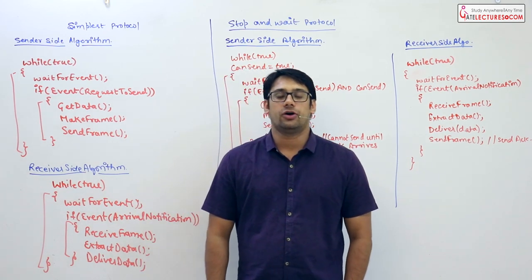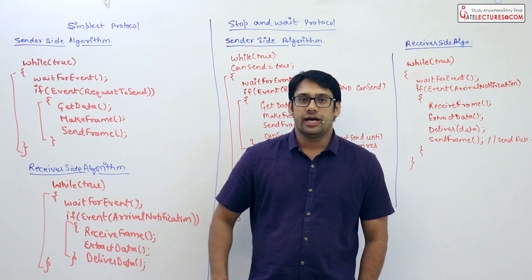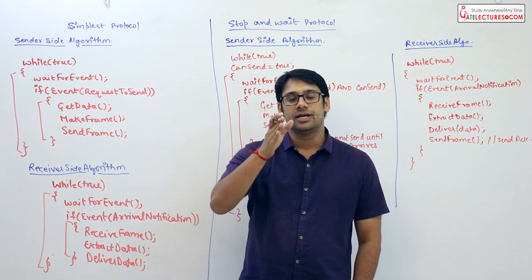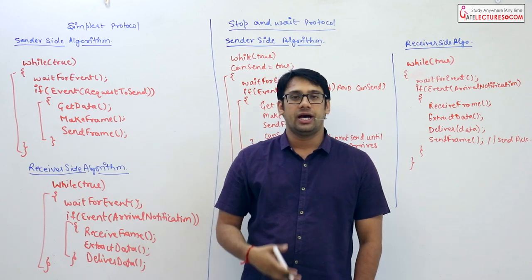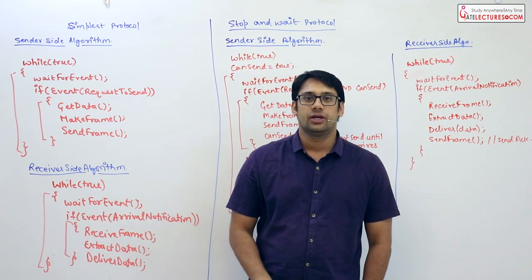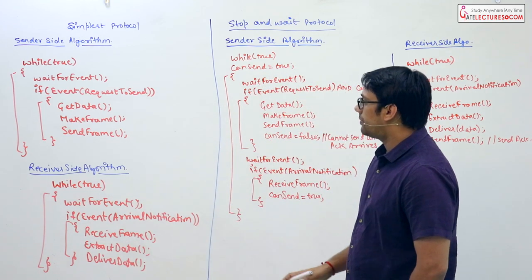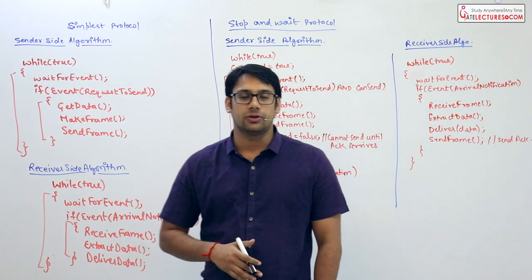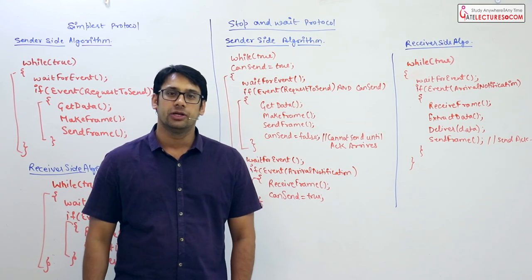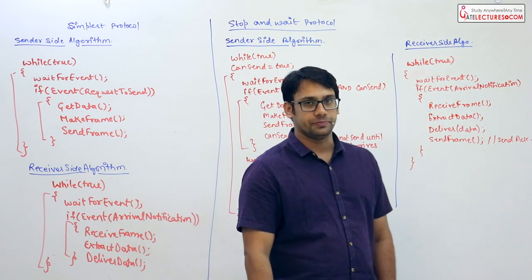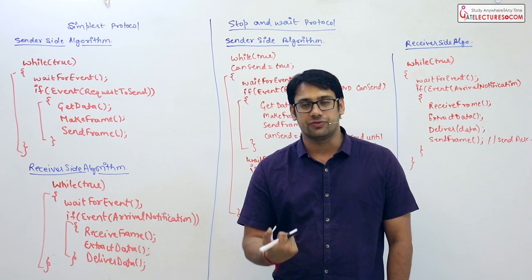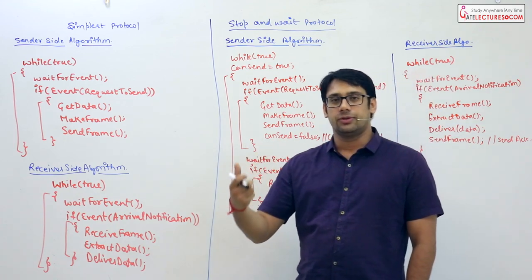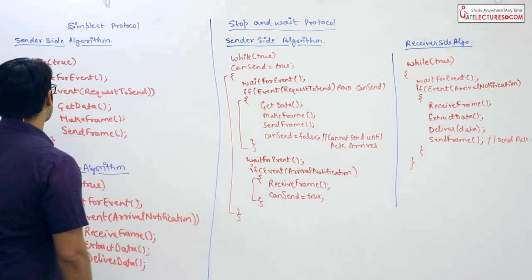In the previous videos we discussed the stop-and-wait protocol and the stop-and-wait ARQ protocol. Before stop-and-wait there was a very simple method called the simplest method, where the sender just sends data to the receiver without waiting for any acknowledgement. In this video we'll discuss the algorithms used on the sender and receiver sides for the simplest protocol, then the stop-and-wait protocol, and then the stop-and-wait ARQ protocol. We'll also find out what problem exists with stop-and-wait ARQ so we can solve it in upcoming videos.